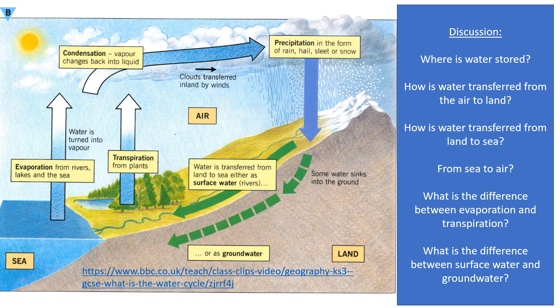Next question: how does water move from sea to air? Water gets from the sea to the atmosphere through a process called evaporation. This is most likely to happen when oceans are warmer.